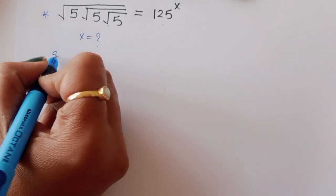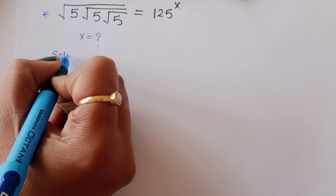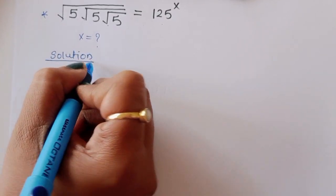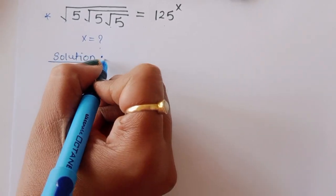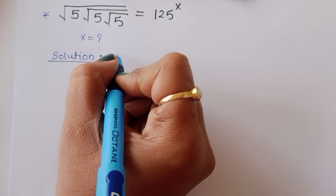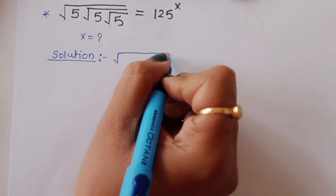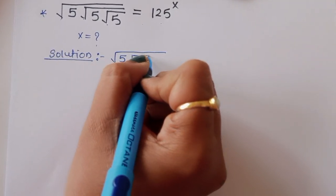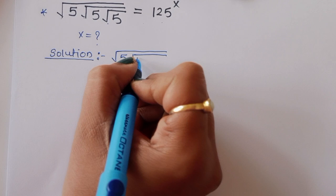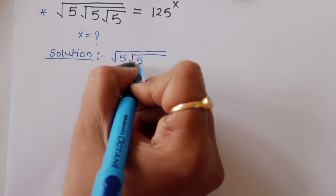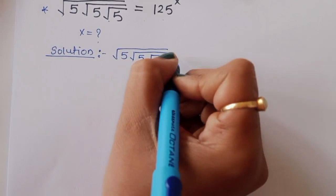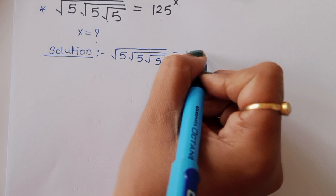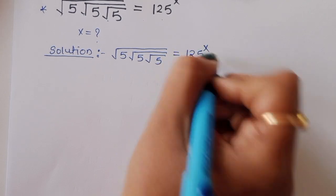Solution. How we can solve this? Let's see. Square root of 5, square root of 5, square root of 5 is equal to 125 raised to x.